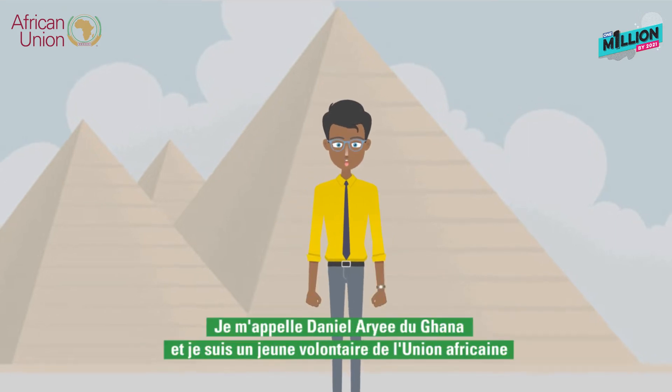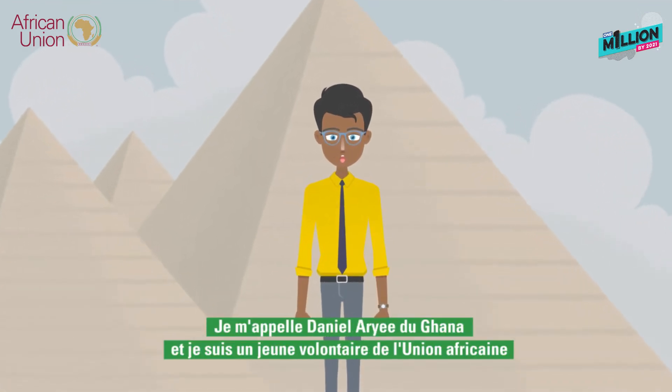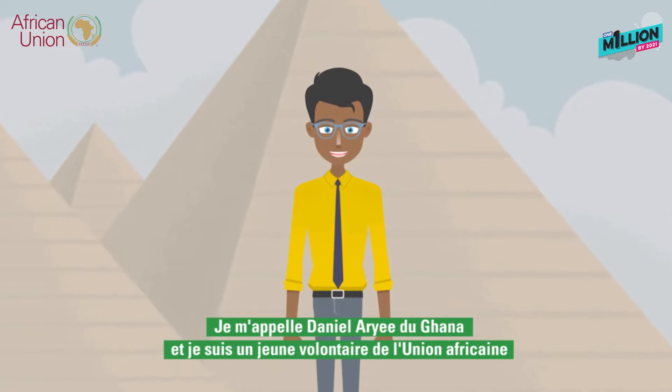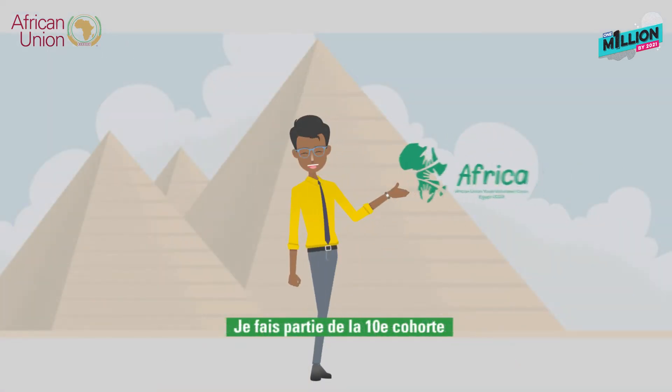Hi guys, my name is Daniel Ayi from Ghana and I'm an African Union Youth Volunteer. I am part of the current cohort.